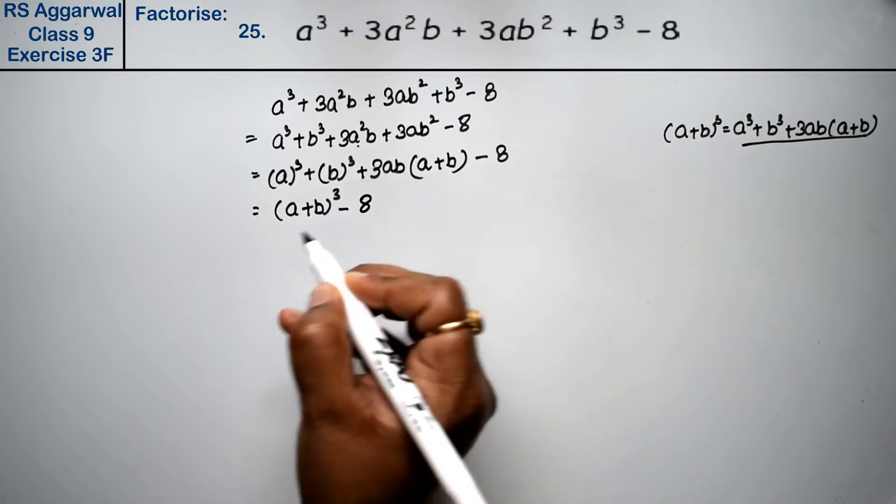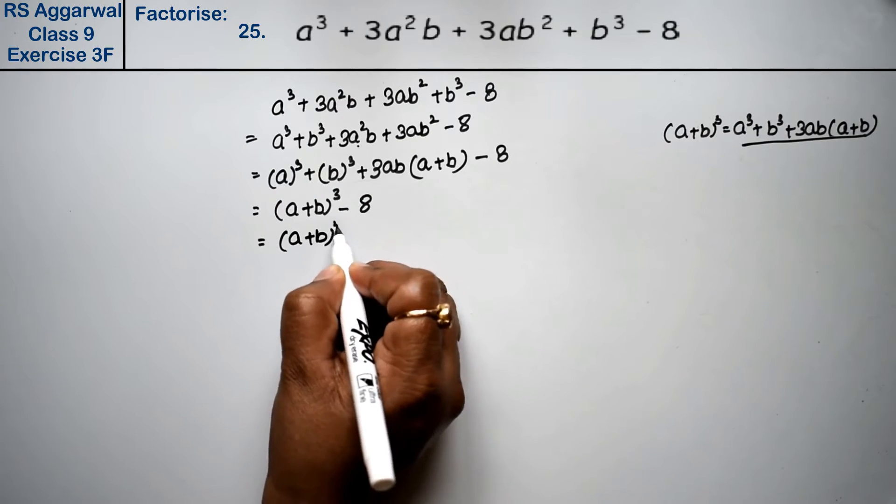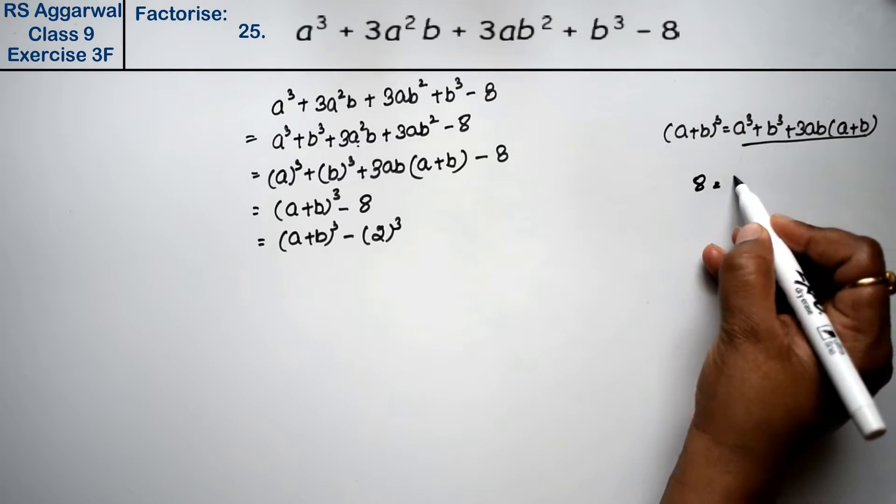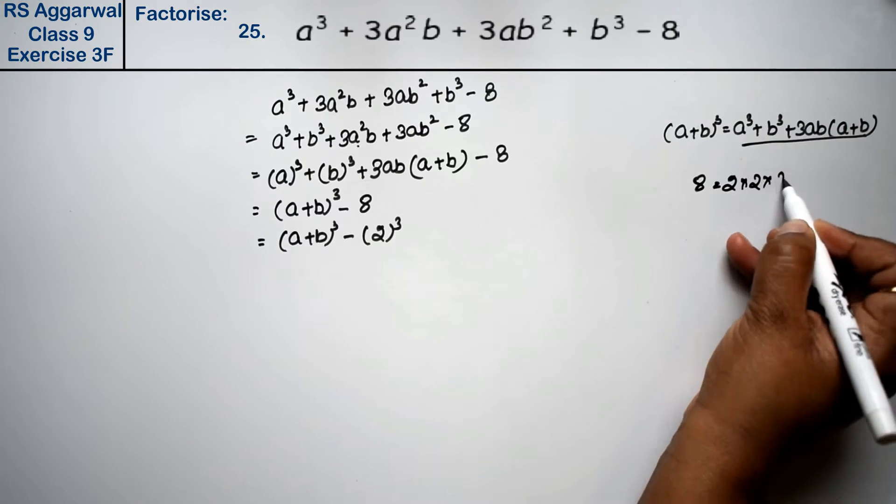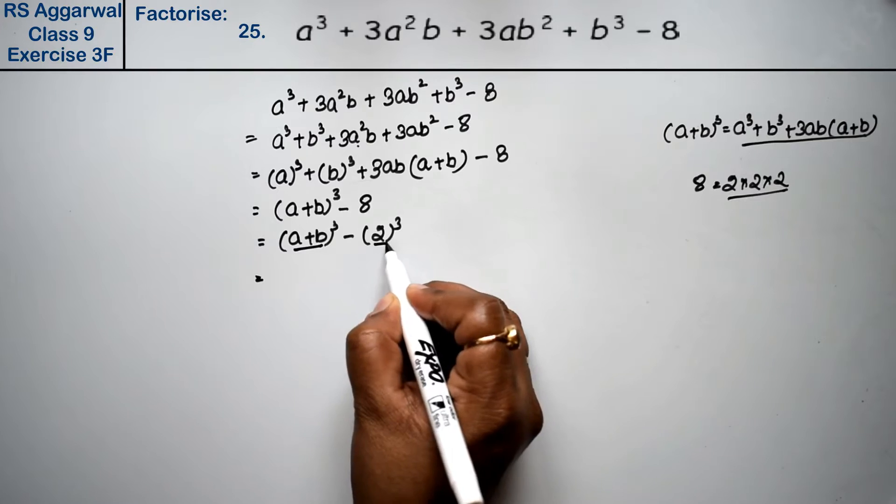Now, we can write 8 as 2 cube, because 8 is 2 into 2 into 2, which is 2 cube. So now this entire expression is a and this is b.